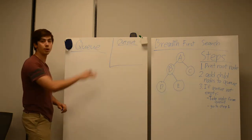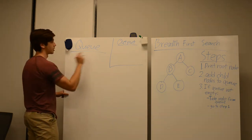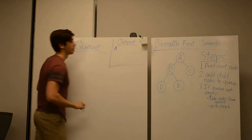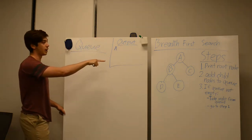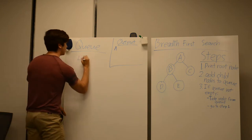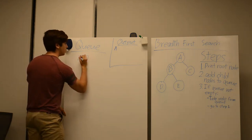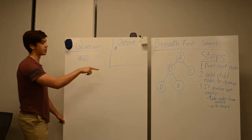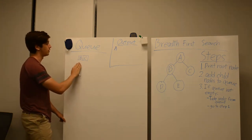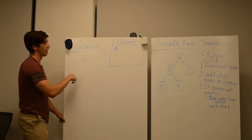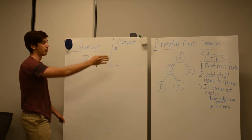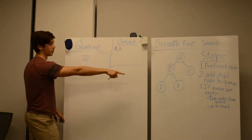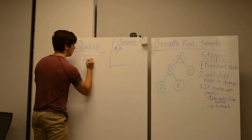So we're going to start at the root node A. We're going to output A — print root node. Then we're going to add the children of A to the queue, so that is B and C. Our queue now contains B and C. Since the queue is not empty, we're going to take B off the queue and start working with B at step one. So we're going to output B and put its children, D and E, onto the queue.